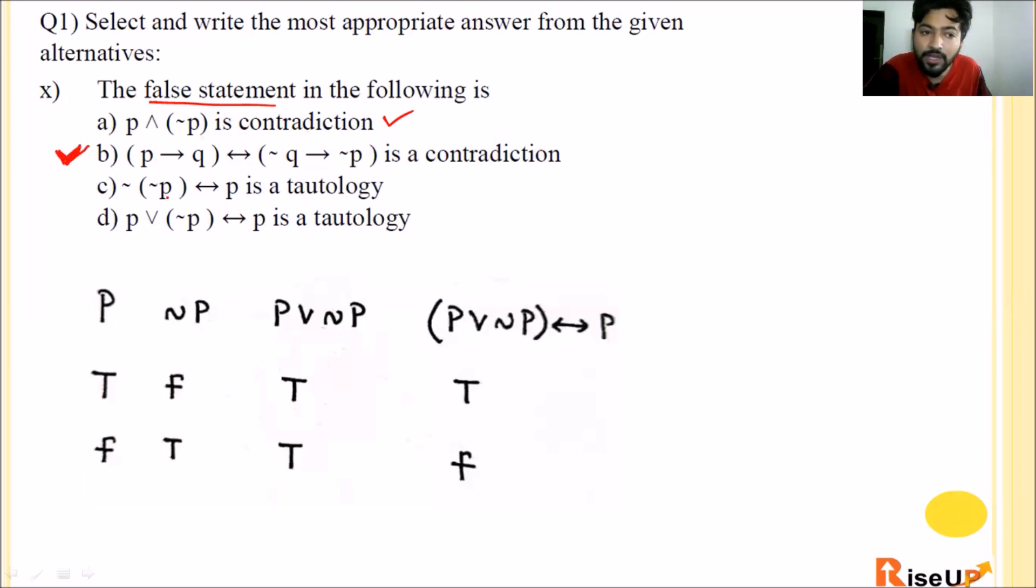Tenth one: Negation of negation P double implication P is a tautology. Let's verify with a truth table. P, negation P, negation negation P which equals P, and finally double implication. When P is T, negation P is F, negation negation P is T, double implication gives T T. When P is F, negation P is T, negation negation P is F, gives F F which is T. So the truth table shows this is a tautology, not a contradiction. So this statement is false. Question number 10 B. I hope it is clear.